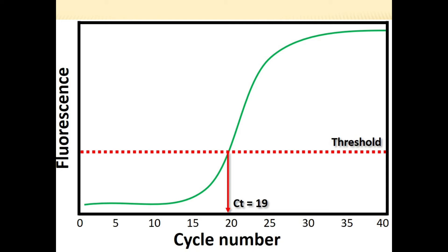For example, if you detect the virus in a sample after 20 cycles, it is called a CT value of 20. If sample A has a CT value of 20 and sample B has a CT value of 30, it simply means there is a higher viral load in sample A as compared to sample B.